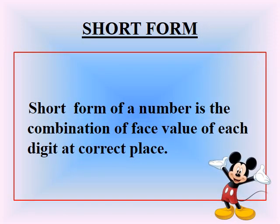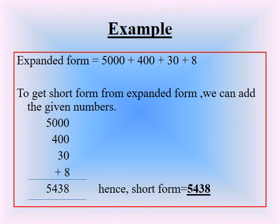Next is to get the short form from the given expanded notation. Short form of a number is the combination of face value of each digit at the correct place. For example, the expanded form given is 5000 + 400 + 30 + 8 and we have to find its short form. To get short form, we add all the given numbers: 5000 + 400 + 30 + 8 = 5438, which is the short form of the given expanded form.